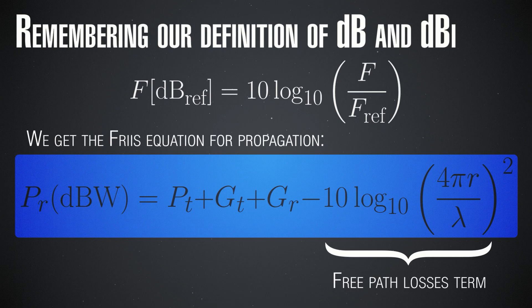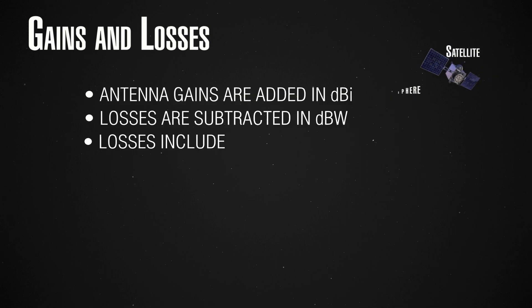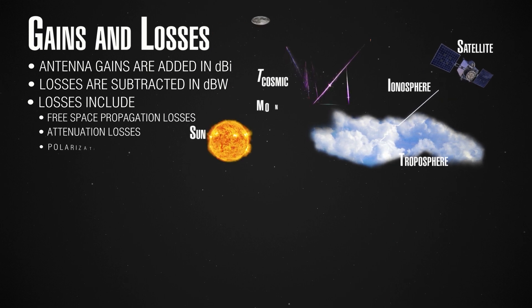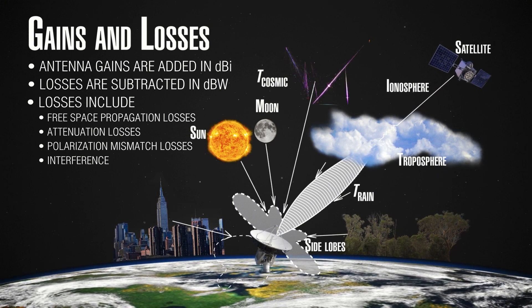A few more words about losses. We have defined losses in dB notation, and in the Friis equation we can easily subtract any additional losses we may have. Our convention is to add all powers and gains — everything that improves the signal — and to subtract any losses. Additional losses could include atmospheric attenuation, polarization mismatch, snow or other atmospheric problems. All of these losses we simply subtract, however many dBs they are, to get the final received power in dBW.